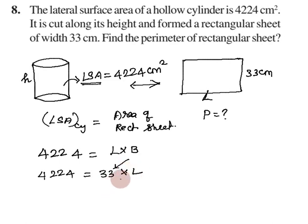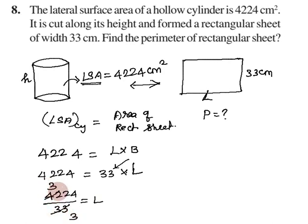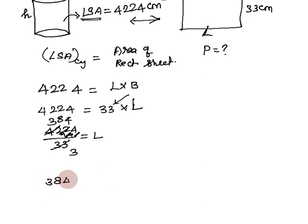So, 33 multiplied by the length equals 4224. Therefore, length equals 4224 divided by 33. Dividing: 33 into 42 gives 1 remainder 9; 33 into 92 gives 2 remainder 26; 33 into 264 gives 8. So the length equals 128 cm.